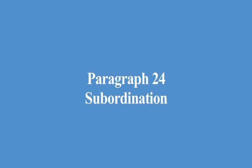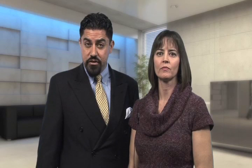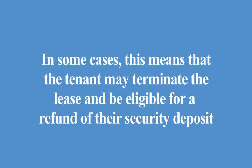Paragraph 24, Subordination. This paragraph explains that the rights of the tenant under the lease will be secondary to the rights of any lender whose mortgage affects the property, or to the rights of any owner's association affecting the property. Paragraph 25, Casualty Loss or Condemnation. If the property is unusable for residential purposes after a casualty loss, review Section 92.054 of the Texas Property Code for the rights and obligations of the parties. Any condemnation of all or a part of the property is considered a casualty loss. In some cases, this means that the tenant may terminate the lease and be eligible for a refund of their security deposit. Any amounts paid due to a casualty loss will be the landlord's sole property.